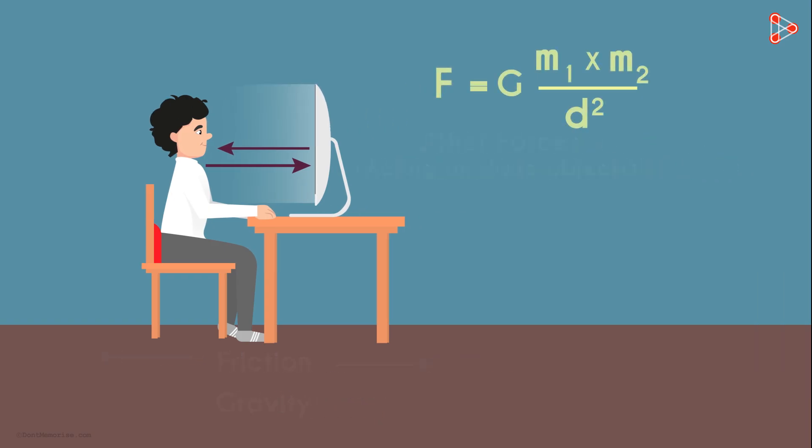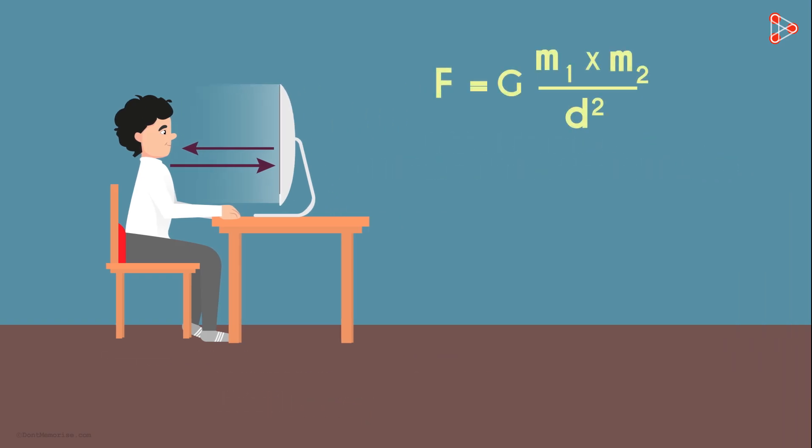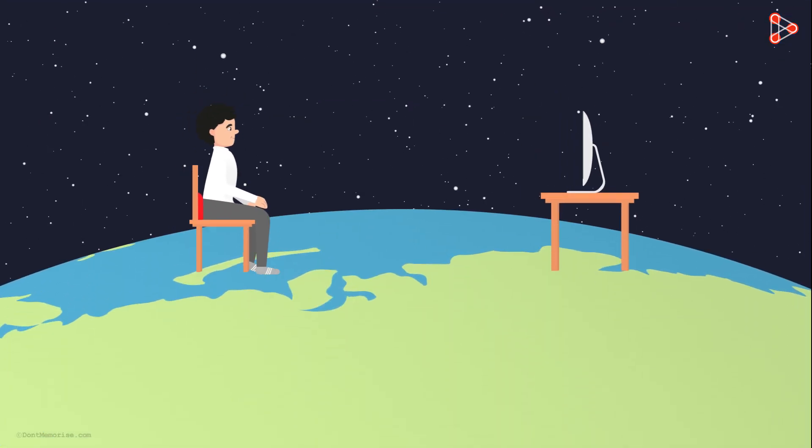You will also get the answer by looking at this formula. The value of the Universal Gravitational Constant is very very small. To calculate the force between you and the computer, M1 and M2 will be your mass and the computer's mass respectively.